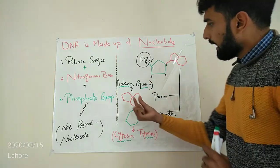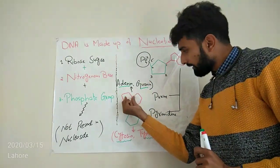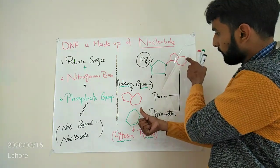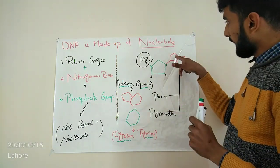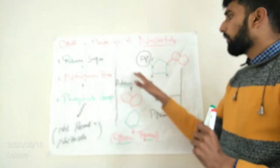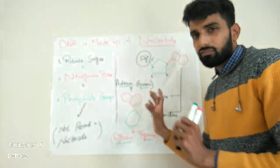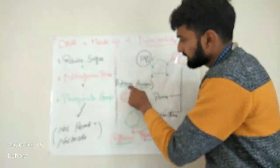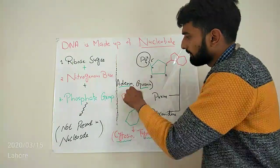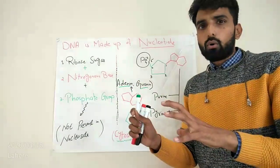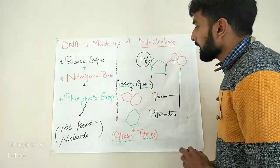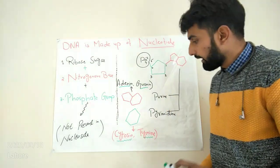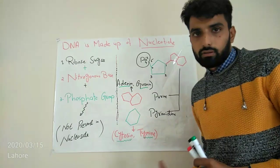Nitrogenous base, it may be two ring structure or it may be one ring structure. If this nitrogenous base is two ring structure like I have made here, it might be adenine or it might be guanine depending upon the structure of these rings. In guanine, there is oxygen present and in adenine, there is amino group present. No need to go into the depth of structure. Similarly, if one ring is present as a nitrogenous base, it might be thymine or cytosine.